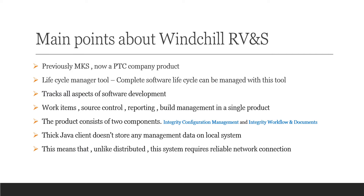The product consists of two components: Integrity Configuration Management and Integrity Workflow and Documents. The client doesn't store any management data on the local system, so you will have a client which always connects to a server — nothing is stored locally. You need an end server, which is a sort of disadvantage because when the server doesn't work you'll have an issue. However, not storing any local information is also an advantage if you are thinking about data privacy. Unlike distributed systems, this system requires a reliable network connection, so without one it is a bit difficult to work.